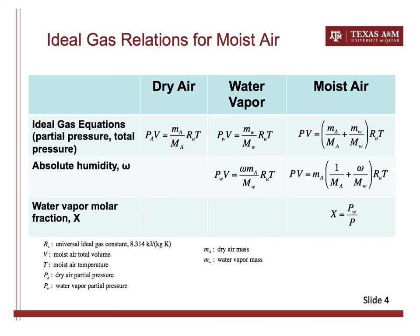Now we can go back to the first slide we started this video with. This slide shows several equations — most of them are ideal gas equations representing various ideal gas relations applicable to moist air. First, let's look at the moist air equation. This is the ideal gas equation of state: P is the total pressure of the moist air, V is the total volume of the moist air system, and n is the number of moles of molecules.